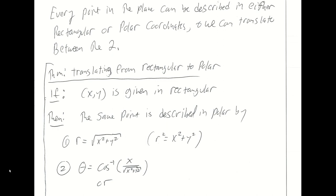We'll have two theorems that allow us to translate between coordinate systems. The first tells us how to translate from rectangular to polar. Given an XY pair, the same point can be expressed in polar using: r equals the square root of x squared plus y squared (from Pythagoras's theorem), and it's often useful to write r squared equals x squared plus y squared. For theta, given x and y, you have several options involving inverse trig: theta equals cosine inverse of x over r, or sine inverse of y over r, or tangent inverse of y over x.